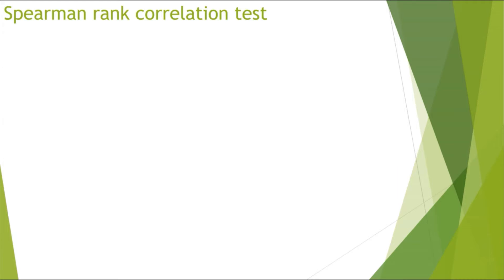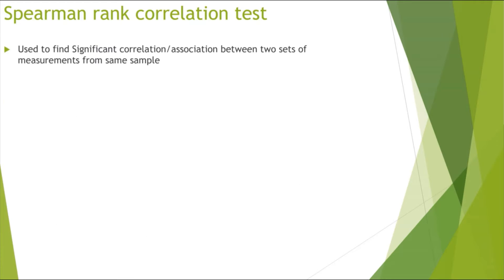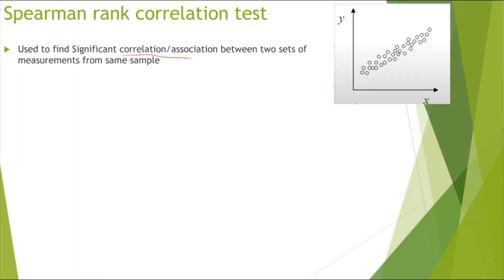Now looking at the statistical tests that you can be asked to carry out. First, looking at the Spearman rank correlation test. This test is basically used to find if there is any significant correlation or association between two sets of measurements from the same sample — so looking for correlation.